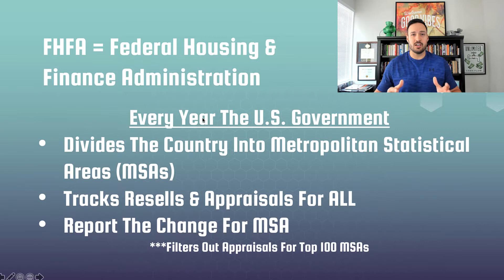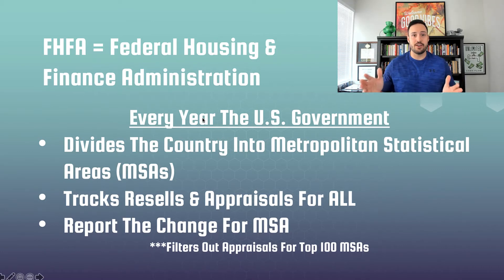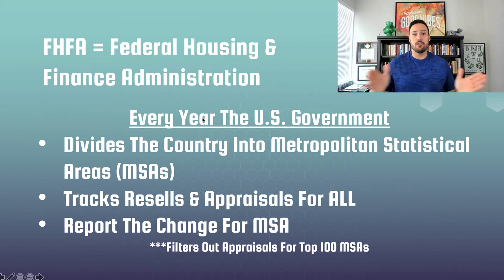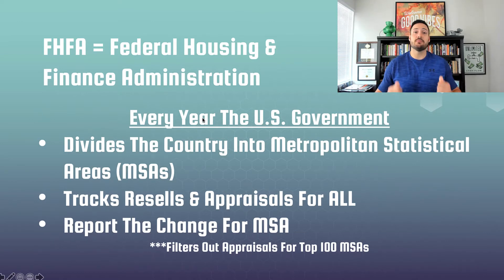A couple of key things to remember on that. When they track a resale, if a home was owned for 10 years and then sold 10 years later for a different number, they take the appreciated value and distribute that over the years. So whenever a home sells, it can change the numbers of the prior years because it's adding more data to make it more accurate.